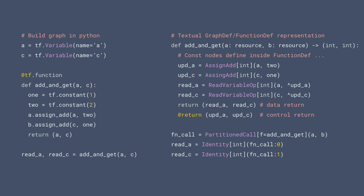We have functions at graph level — function def and graph def in TensorFlow — and they have two types of returns. You might return a data type, such as two tensors read_a and read_c. But there is also a special kind of return annotation called control return. It doesn't return any data, but you can group some ops inside your function def and specify that these ops must always run. When you have a control dependency on the function call, the runtime verifies that every op that is part of the control return set will run. The main graph has a partition call, which is the TF2.0 function call mechanism for partitioning, multi-device invocation, and graph optimization.